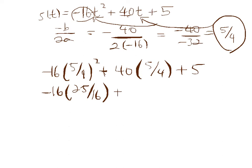So we have negative 16 times 25 over 16 plus 40 times 5 over 4 plus 5. So negative 16 times 25 over 16, the 16ths cancel. We get negative 25. 40 times 5 over 4, the 4 cancels with the 40 to leave us with the 10 left. So it's plus 10 times 5, or 50, plus 5.